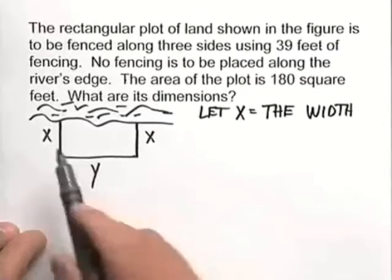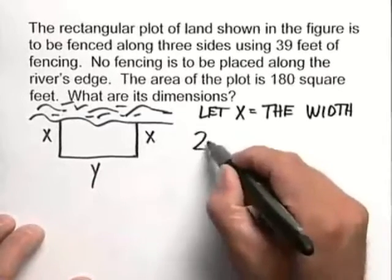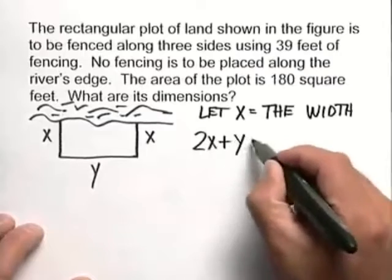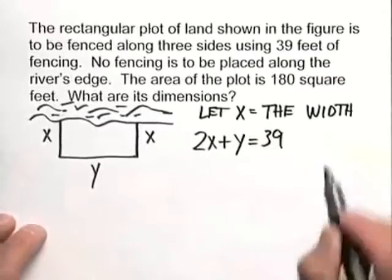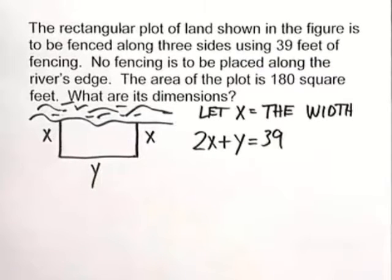This is a semi-perimeter problem, but knowing that we're not going along the river, we can say that 2x plus y has to equal 39. That gives us the amount of fencing we're going to need to fence off this corral.